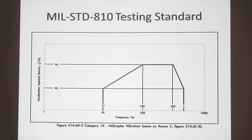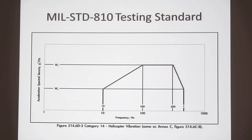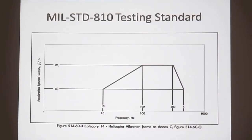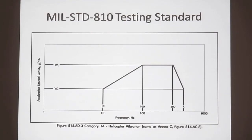This is a curve taken from MIL-Standard 810 for random vibration. If one looks at the curve shown here, what this represents is an envelope. Many tests have been run under actual service conditions, and the results all fit within that envelope. So if your equipment can pass the stresses imposed by that envelope, it will certainly pass in the field.